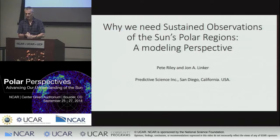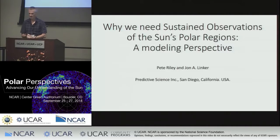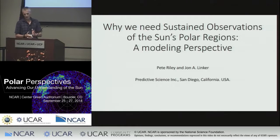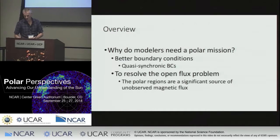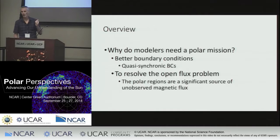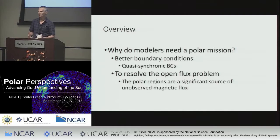Good morning. Because we had the talks yesterday morning and afternoon, I've been able to change my talk so that I don't repeat some of the same stuff that Chip and Michael talked about. What I'm going to try and do is focus on a couple of things: first, why modelers need a polar mission — that'll be a repeating theme — and more importantly, what we've called the open flux problem. Originally I called this the missing solar flux problem because it sounded more astrophysical, but it's really a problem with the models.